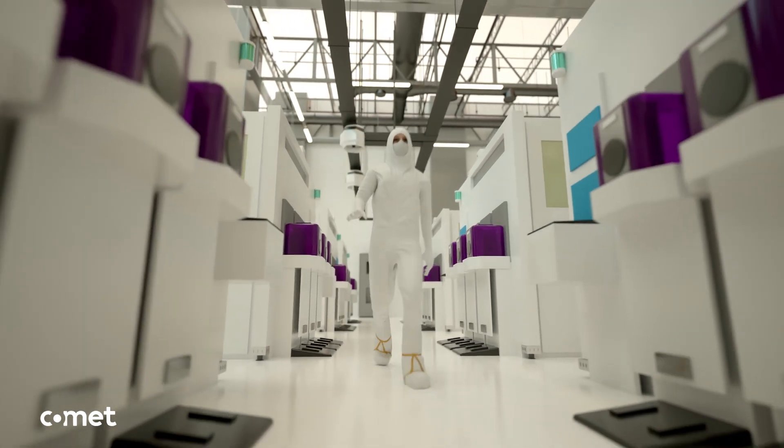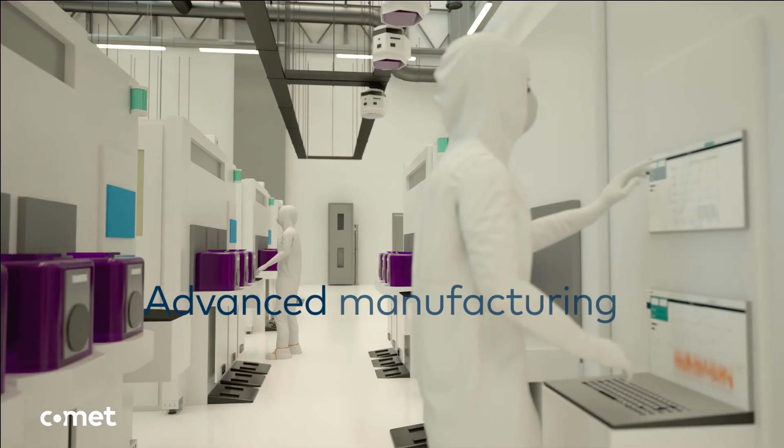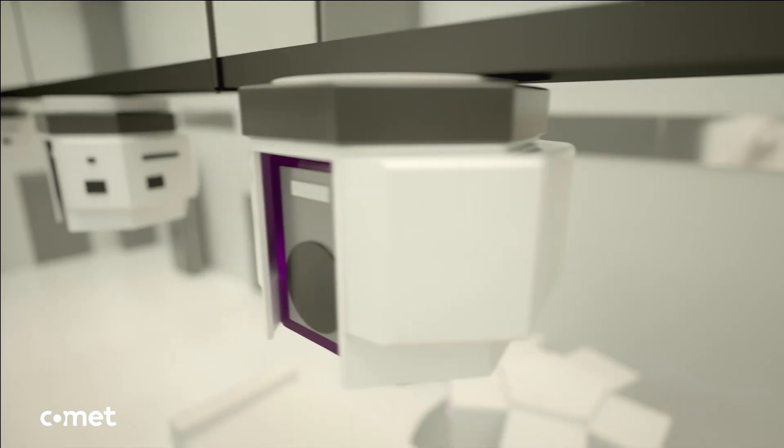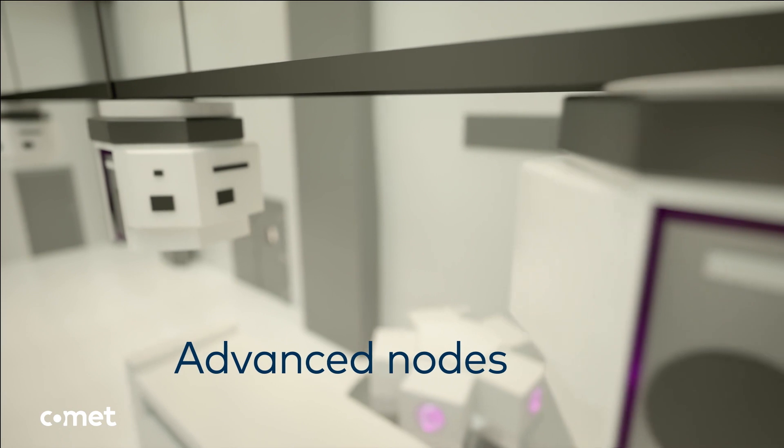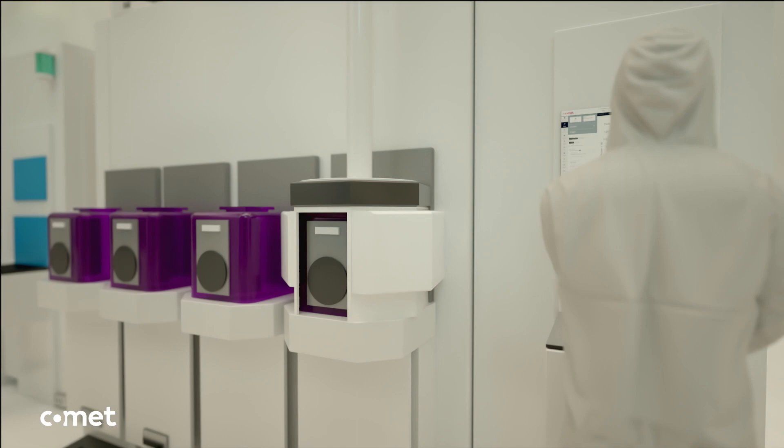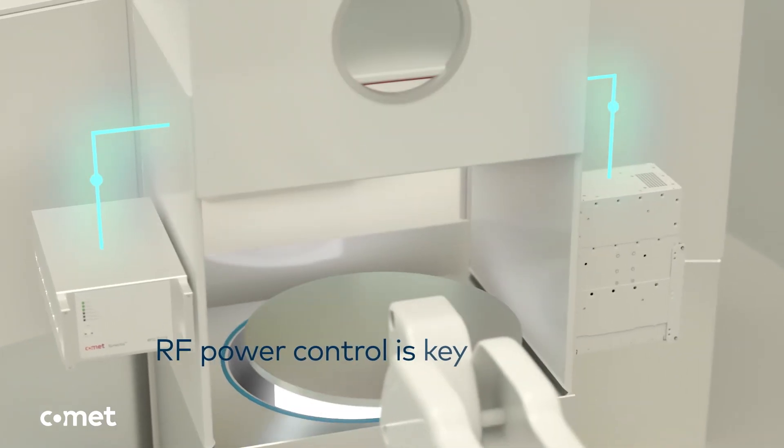Semiconductor fabs are home to the most advanced technology manufacturing. With each technology node, chip production becomes more and more complex. Therefore, it is key that subsystems involved in production are optimized for those new technologies. COMET knows the requirements of leading-edge processes.